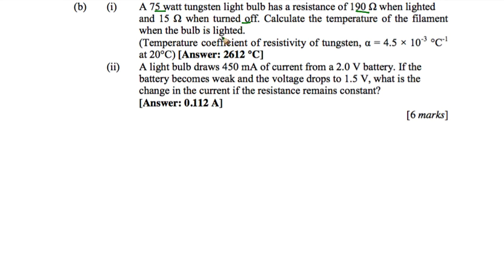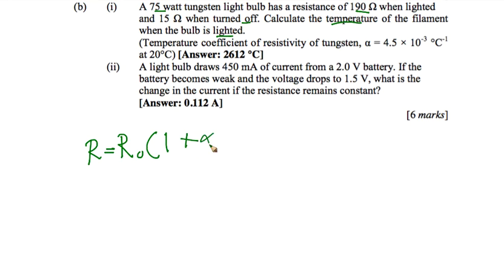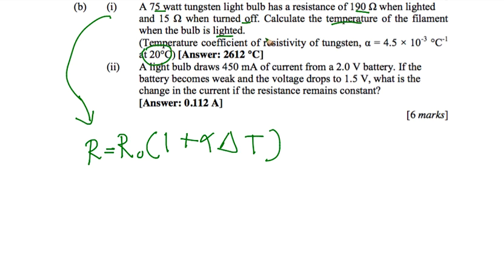The equation to find the temperature of the filament when the bulb is lighted is R = R₀ + αΔT. Here, R₀ refers to the initial resistance at 20°C, which is the resistance when the bulb is turned off, which is 15 ohm.